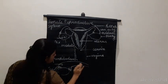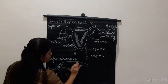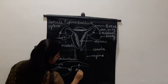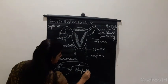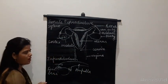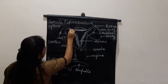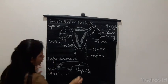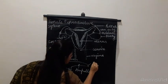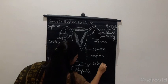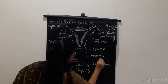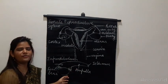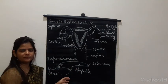After the infundibulum, the middle portion is called the ampulla. When we go further, we find a very narrow passage called the isthmus. So the fallopian tube has three parts: the infundibulum, the ampulla, and the isthmus.